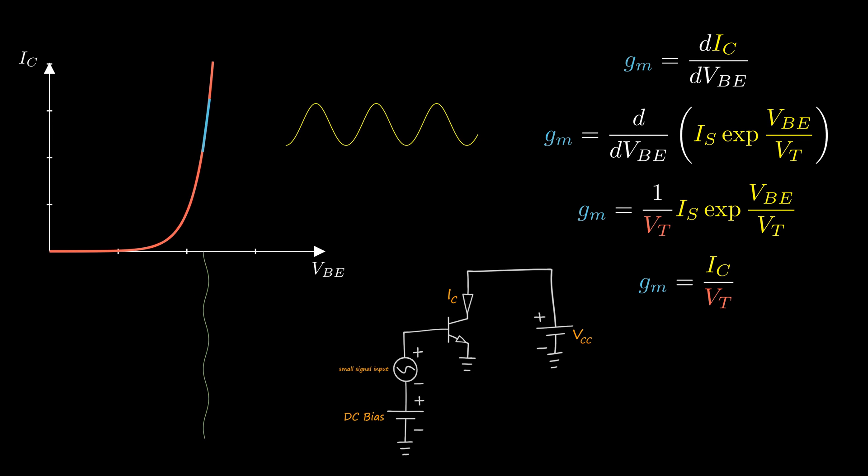As the DC collector current increases as a result of increasing VBE, the transconductance increases.